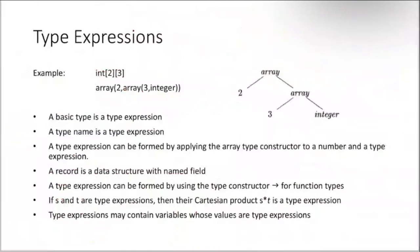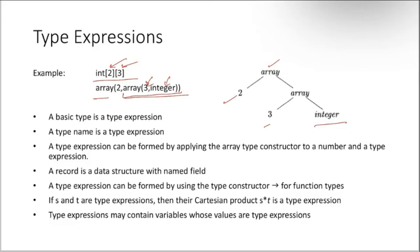A type expression like int[2][3] means a two-dimensional array with two rows and three columns. It is basically an array of two arrays, where each array has three integer elements. This can be represented by a syntax tree where array, 2, and 3 are the size, and the base type is integer.